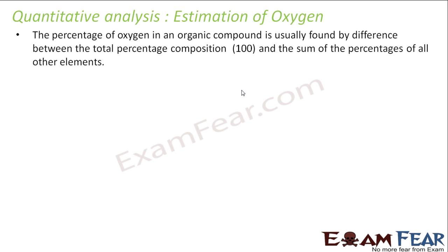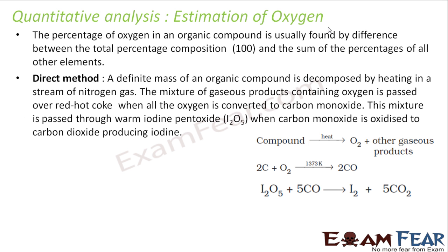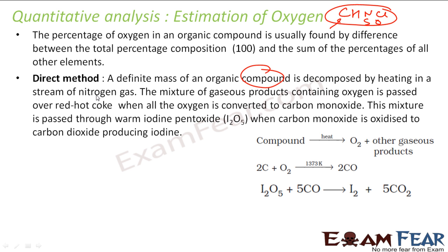Now let's estimate oxygen. Generally, we find all other elements — nitrogen, phosphorus, chlorine, sulfur — and subtract their percentages from 100 to get the percentage of oxygen. That is the general process. But there is a direct method too: you heat the compound, and the oxygen gas obtained is passed over red-hot coke, which converts it to carbon monoxide.